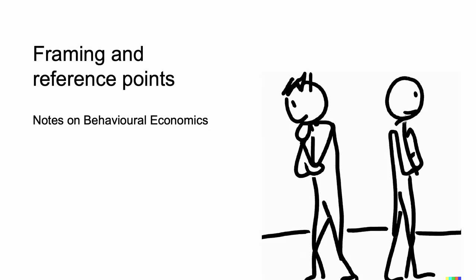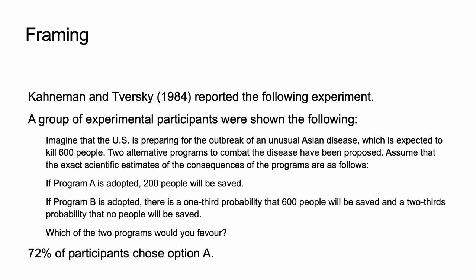This video describes two anomalies in expected utility theory: framing and reference points. Under expected utility theory, a person's choices should not be affected by how the options are described or by how their preferences are elicited. Kahneman and Tversky, 1984, reported the following experiment.